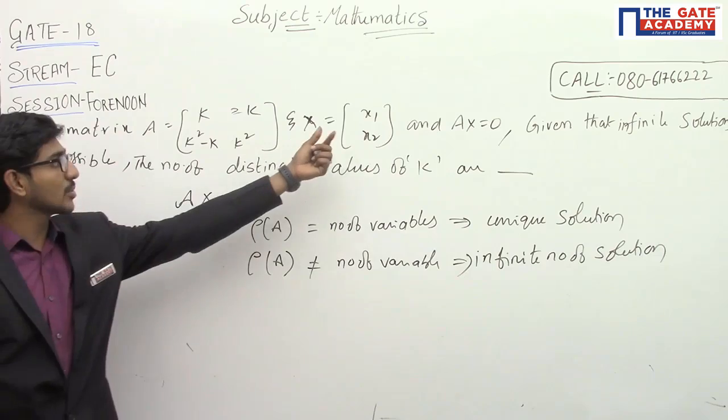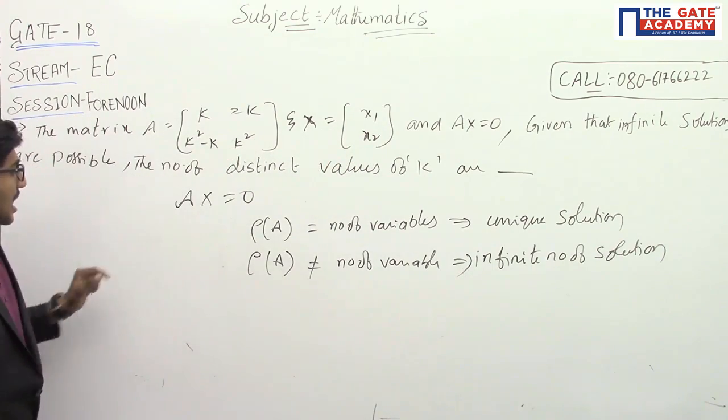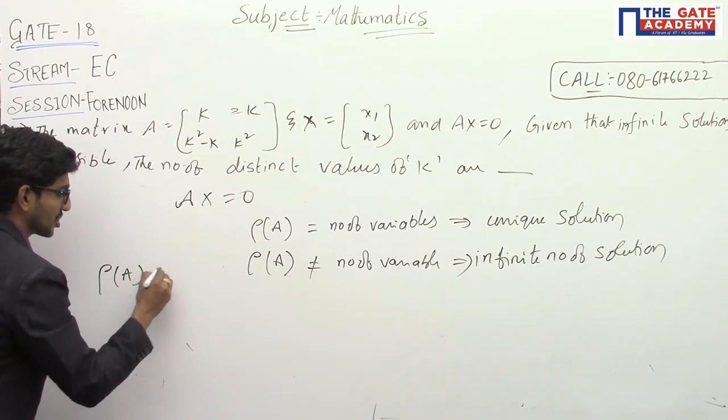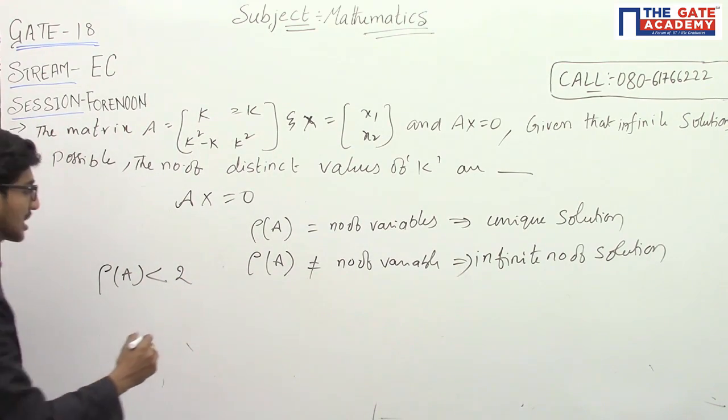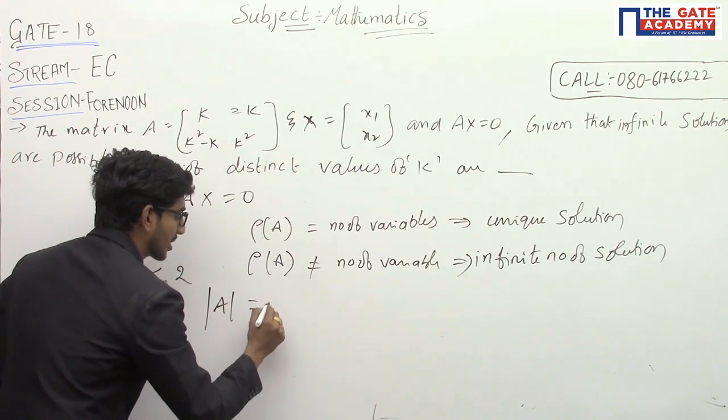Now, number of variables are 2, and our rank of A should be less than 2. That means, determinant of A should be equal to 0.